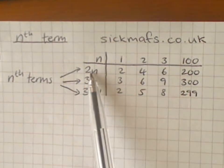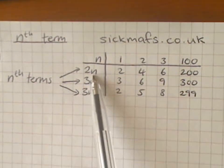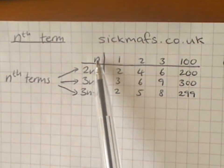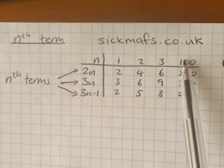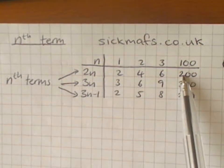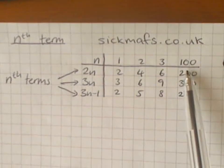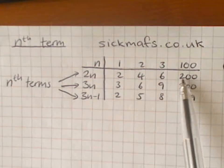And that way, once you know that your rule is 2n, you just have to double the n bit, i.e. where you are in the pattern. So, double a hundred, you get two hundred. So, the hundredth number in this pattern here is two hundred.